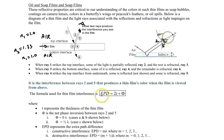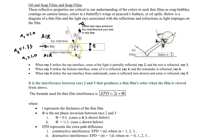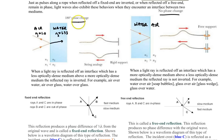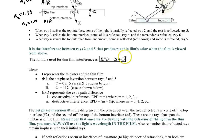The formula used is EPD — extra path difference — because ray 5 travels an extra distance: down along ray 3 and up along ray 4, covering a total extra distance of 2t, where t is the thickness of the film. This 2t term is then combined with a net phase inversion factor that depends on the phase shifts occurring at the top and bottom interfaces.